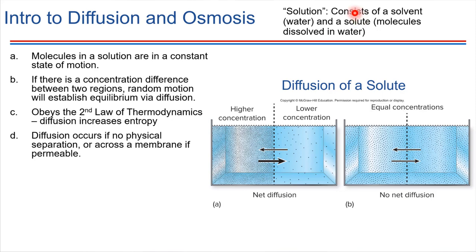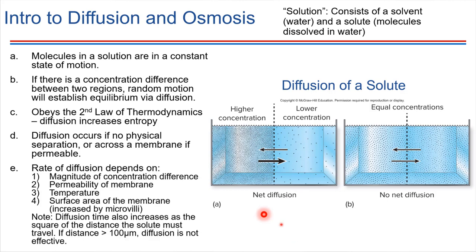All right, so if we're considering diffusion of solute molecules, what are some things that influence the rates of diffusion? It turns out there are a few key things that really come into play in living systems. So definitely the concentration difference between one area and another, or on one side of a membrane and another side of a membrane.